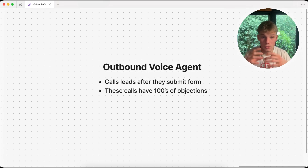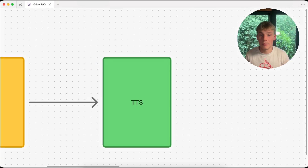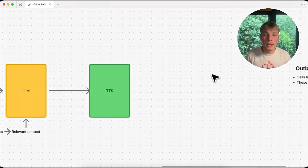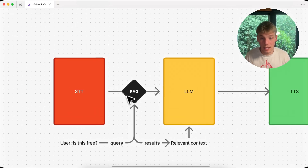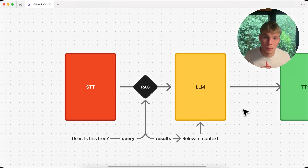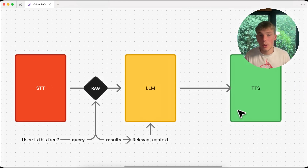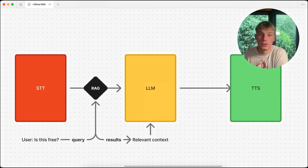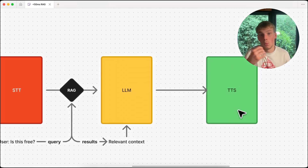Instead of taking those hundreds or thousands of objections and dumping them into the system prompt, we put them into a vector database so that when the user states an objection, that specific objection is passed into the LLM's system prompt before it responds. This way the LLM knows exactly how to respond, because the only instruction in the prompt is the one relevant to what the user just said — making it obvious and clear for the LLM.